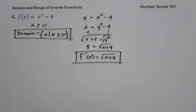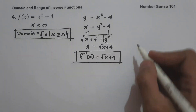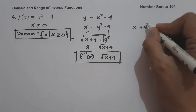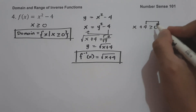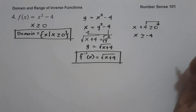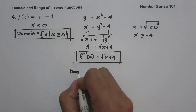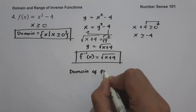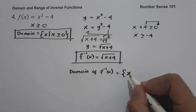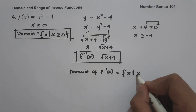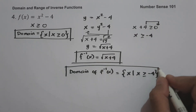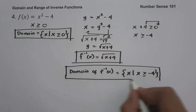To find the domain of the inverse function, we equate the radicand greater than or equal to 0: x plus 4 greater than or equal to 0. Moving 4 gives x greater than or equal to negative 4. So the domain of the inverse function is the set of x values such that x is greater than or equal to negative 4.